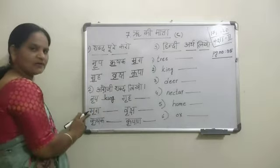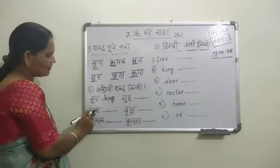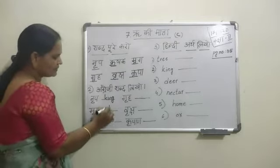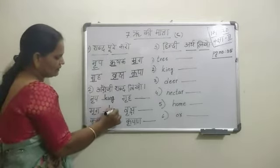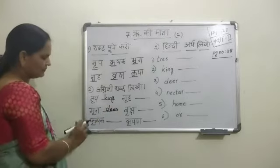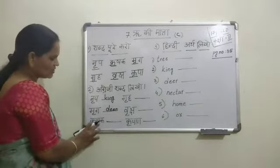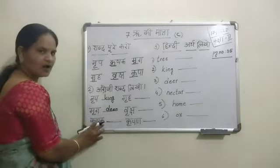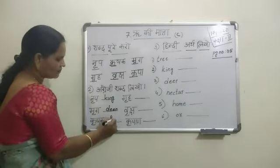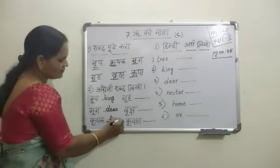And next one: Ma ki Ruu Matra — say Mruga. Mrug means Deer. D-E-E-R. Next: Ka ki Ruu Matra — say Krusha, Ka. Krushak means Farmer.